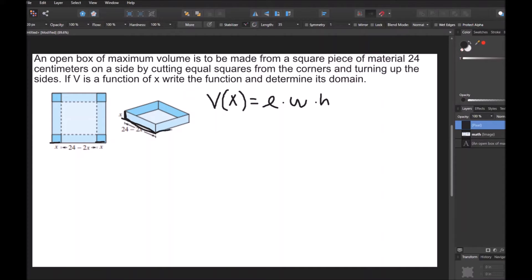So it's going to be 24 minus 2X. And then my width is going to be this side length. But since it's a square, it's also going to be 24 minus 2X. So I can simplify that into X times (24 minus 2X) squared. And that's V(X).